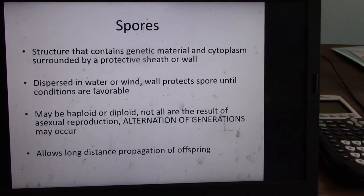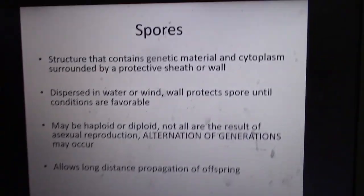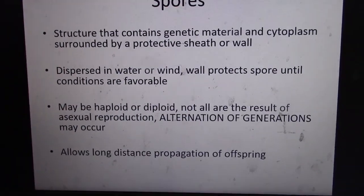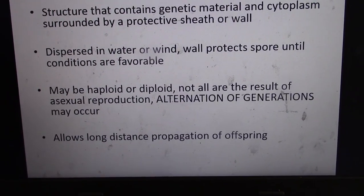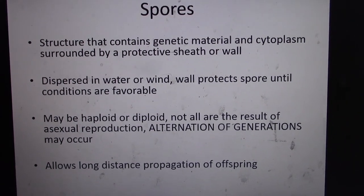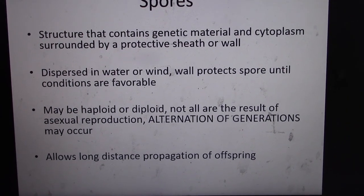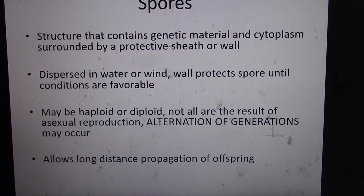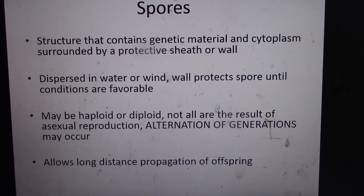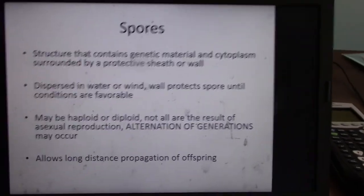It'd be kind of like if your sperm left your body, grew legs, walked around for a little bit, or an egg did the same thing, and then fertilized and turned into a new person. No one wants that, right? Our world would be completely bombarded with sperm. But they may be haploid or diploid. So these body forms. This is called alternation of generations. With immobile organisms, it allows for long distance propagation of offspring.